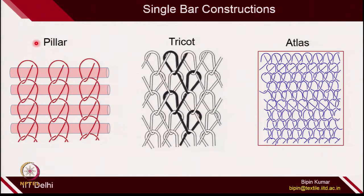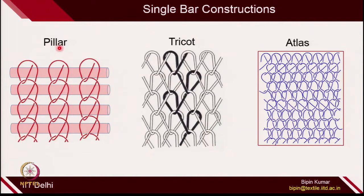Just a quick recap of single guide bar structure. In the last class, we talked about 3 categories of single bar construction where a single guide bar was used. First was pillar, where there was no connection between the wales. The fabric is created with the help of weft inlays, or sometimes pillars are used in double bar constructions to give support.